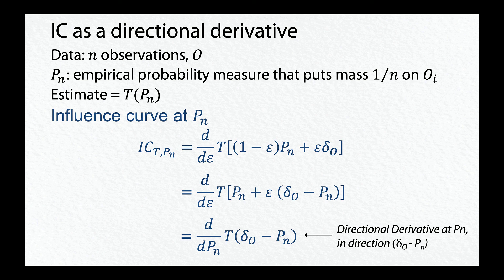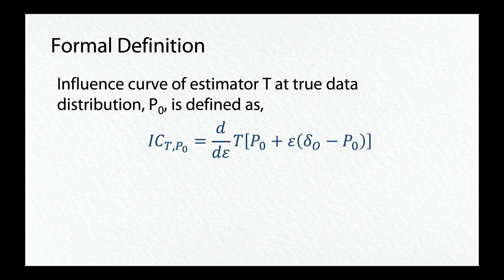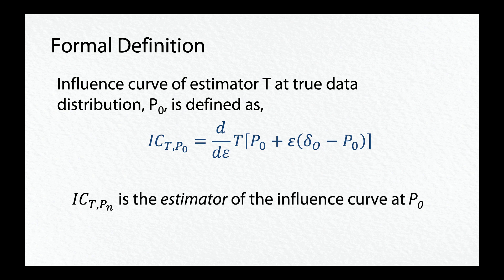We have been considering an influence curve at empirical distribution p_n. The influence curve at the true data distribution, denoted as p0, is defined in the same way. When we analyze data, typically p0 is not known, and so we estimate it as p_n. The influence curve at p_n is the estimator of the influence curve at p0.